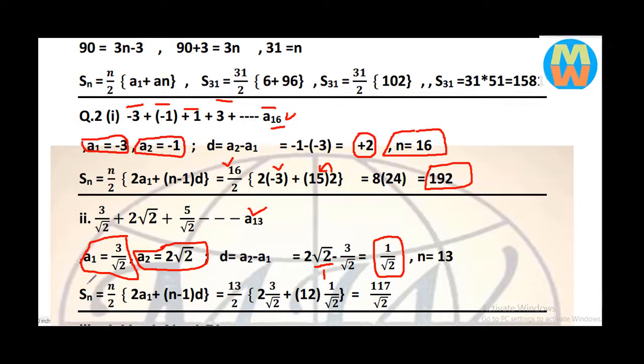Applying the Sn formula: n over 2 into 2a1 plus n minus 1 into d. Substituting values: n is equal to 13 over 2 into 2a1 plus 12, that is n minus 1, 13 minus 1 equals 12, into d which is 1 over square root 2. Taking square root 2 common.